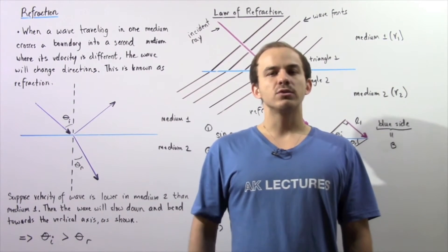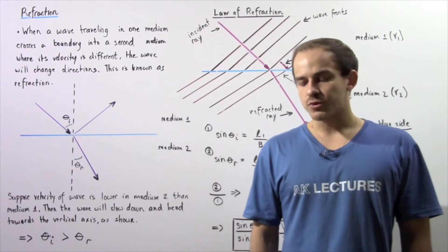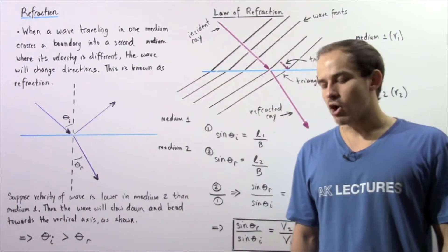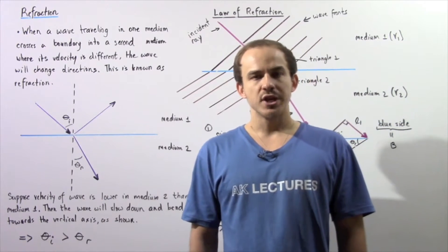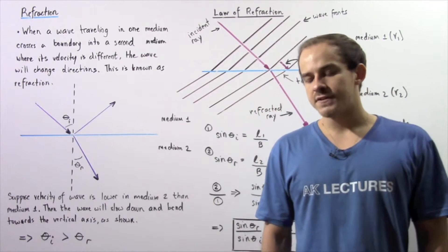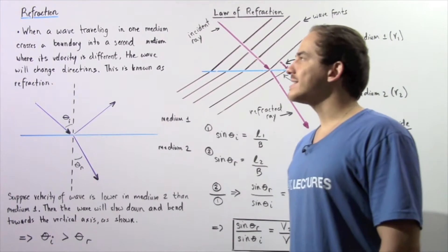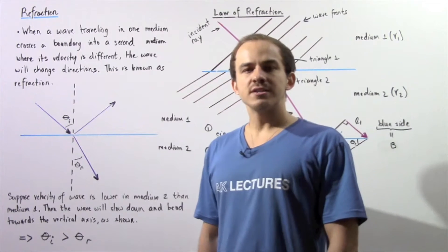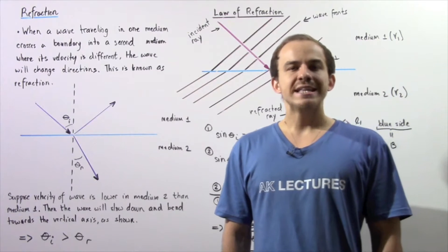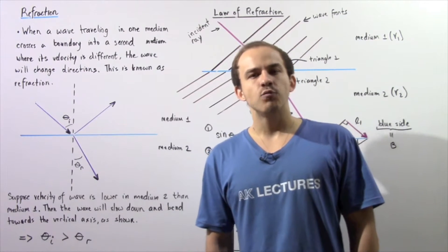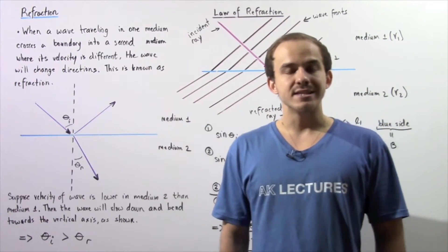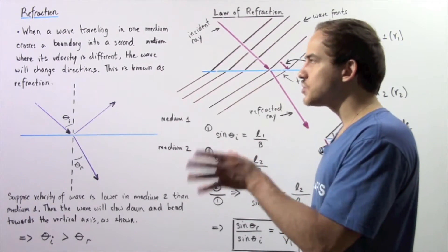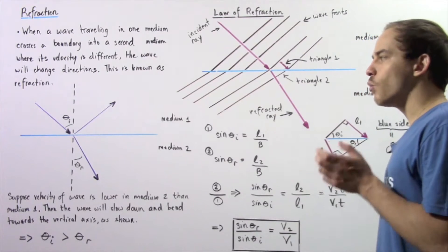In the previous lecture we began our discussion on a phenomenon known as reflection, and we said that essentially all types of waves are capable of reflecting off of other objects and surfaces. Now we're going to talk about a second type of phenomenon that deals with waves known as refraction. When a wave traveling in one medium crosses a boundary into a second medium in which its velocity is different, that wave will change its direction — it will bend. This bending of the wave because of a difference in velocity between the two mediums is known as refraction of waves.